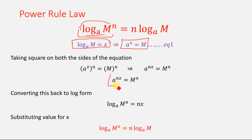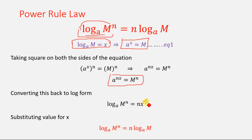We have the new equation a to the power nx equals m to the power n. Converting back into logarithmic form gives log base a of m to the power n equals nx. Since we supposed x equals log base a of m, substituting gives log base a of m to the power n equals n log base a of m. This is the power rule law. We use these rules and properties of logarithm to simplify complex equations in mathematics and physics.